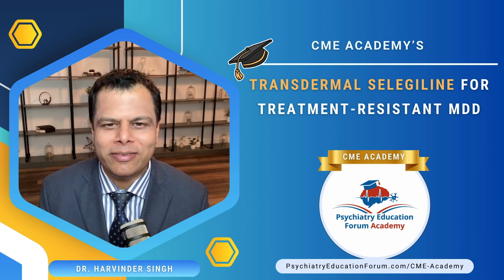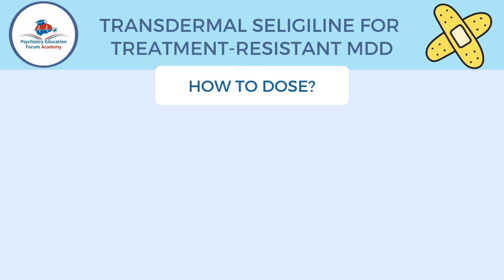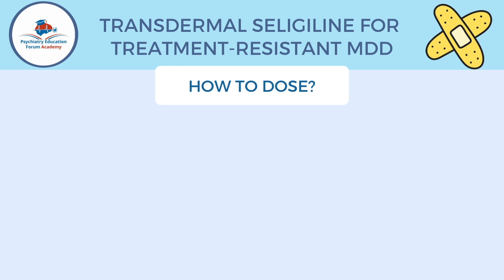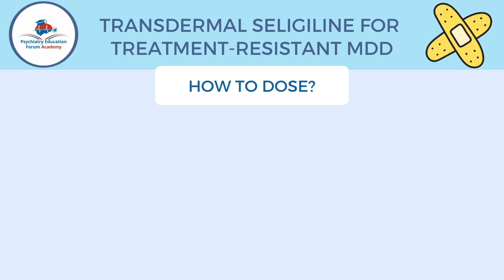Let's start the session today — how to dose this medication. It mainly comes in three doses. It's a patch. Transdermal selegiline is a patch, not a pill. Let's understand a little bit more about the basics of how to use this clinically in your daily practice. The other commonly used generic name is EMSAM for transdermal selegiline — that's what we commonly know it as.